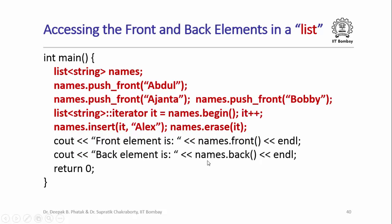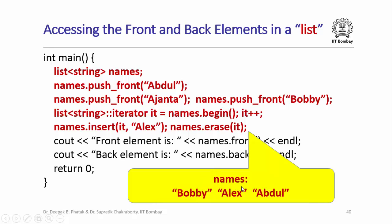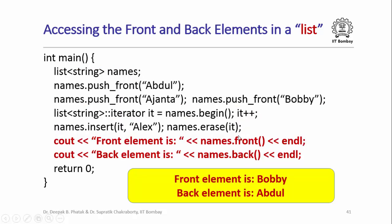The list class also provides special functions to directly access the elements at the front and back of the list. After the previous sequence of operations produces the list Bobby, Alex, Abdul, I can call names.front() to get the front element and names.back() to get the back element. The output is: the front element is Bobby and the back element is Abdul.